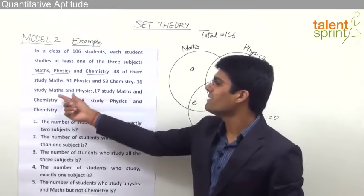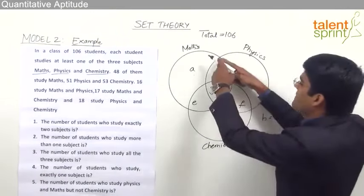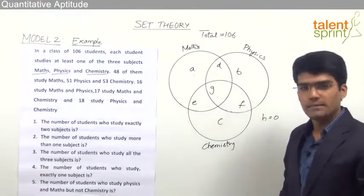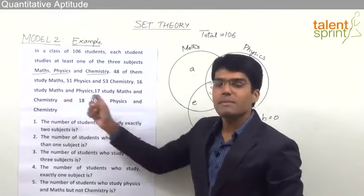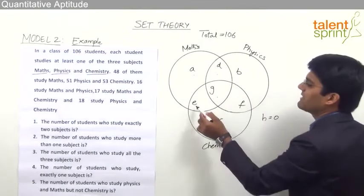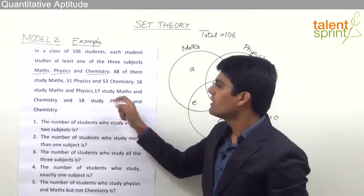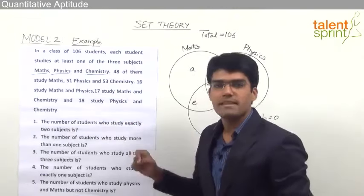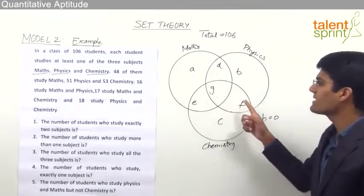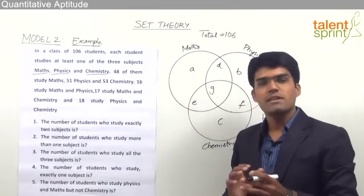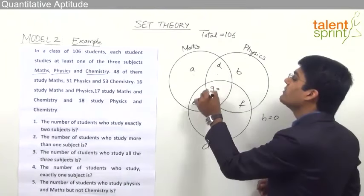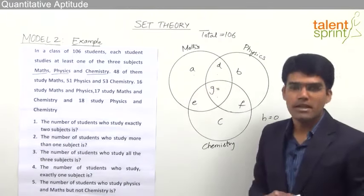16 students study Maths and Physics, represented by D and G, so D plus G equals 16. 17 students study Maths and Chemistry, represented by E plus G, so E plus G equals 17. And 18 students study Physics and Chemistry, represented by G plus F, so G plus F equals 18. To fill the values of each region, we must first find G — the centermost region overlapped by all 3 circles — which is not given directly in the question.